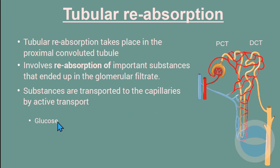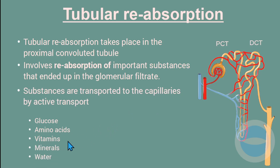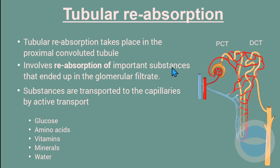The substances reabsorbed back into the blood are glucose, amino acids, vitamins, minerals, and water. A large amount of water is reabsorbed back into the blood capillary in the proximal convoluted tubule.